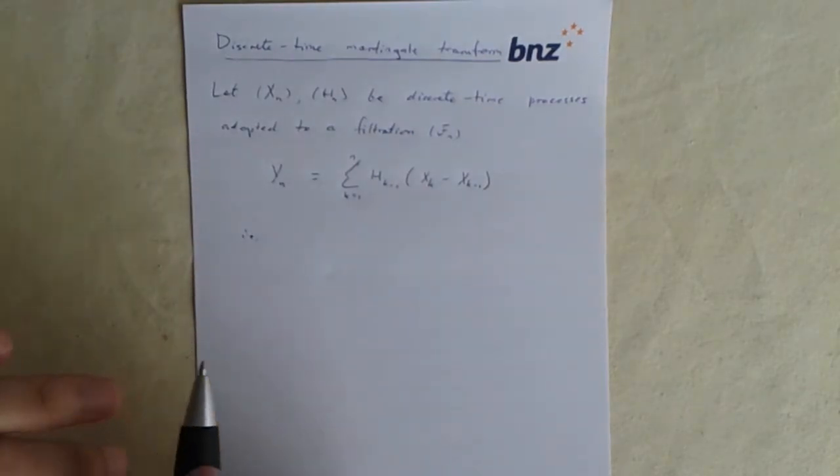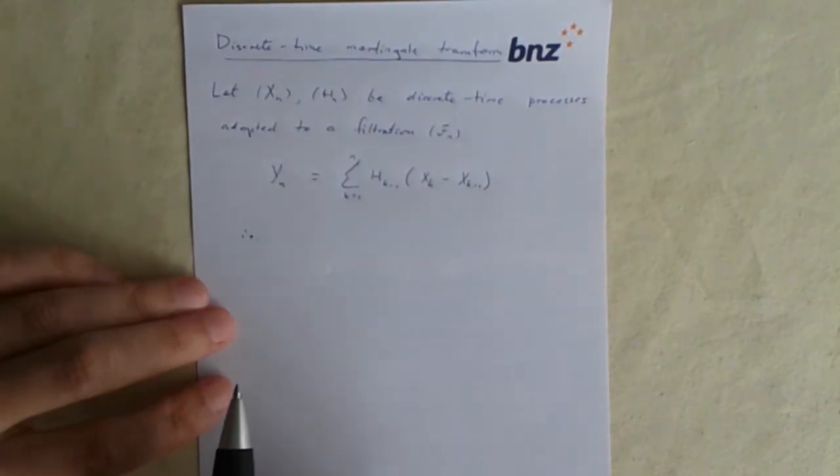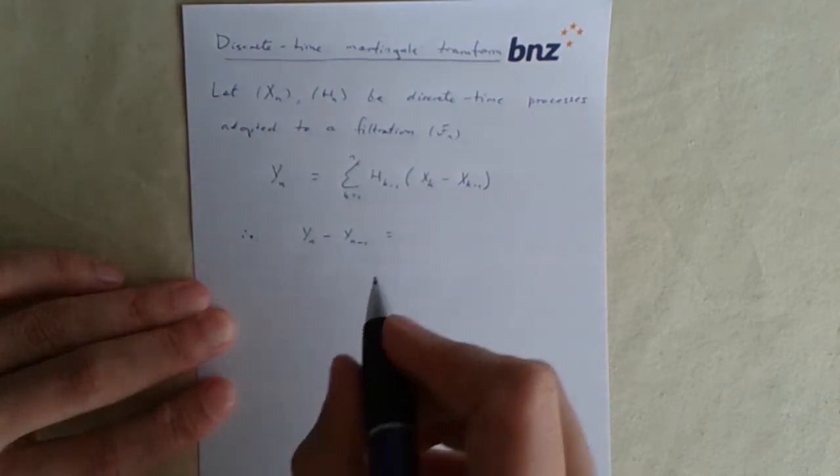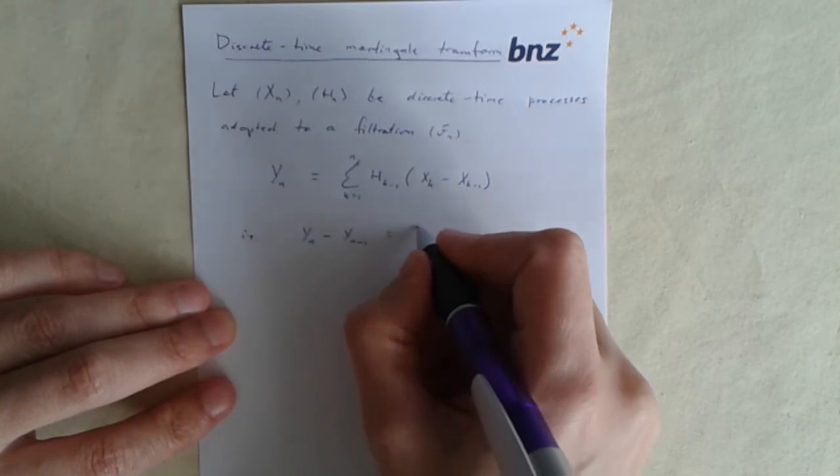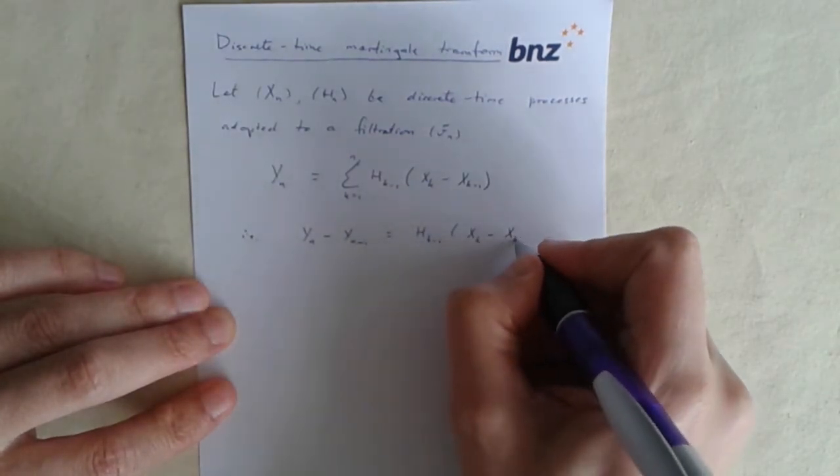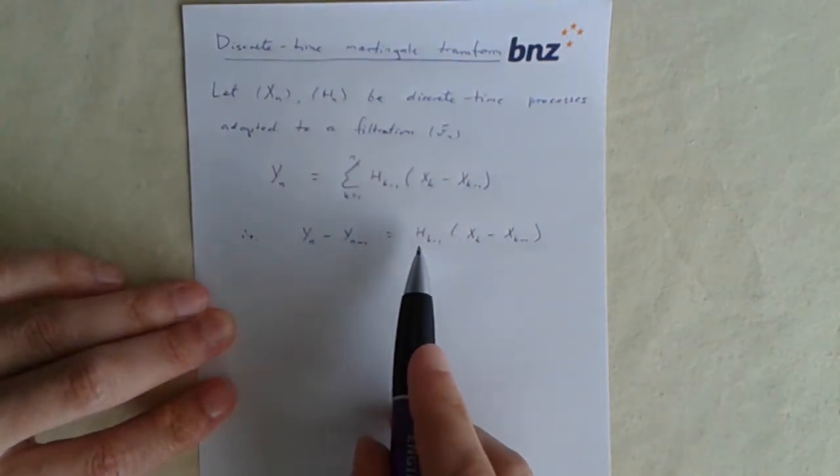Or another way of writing it that is more informative, sort of analogous to the differential form in the continuous time case, would be to just write the differences. The increment of y from n minus 1 to n is the same as the increment of x but multiplied up by h.